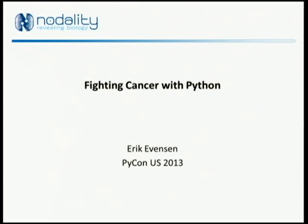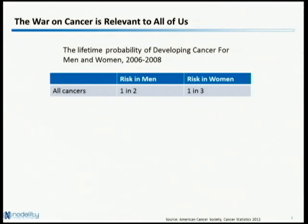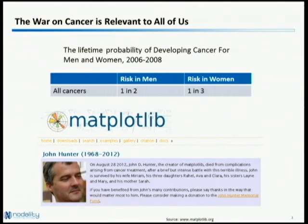I've actually been wanting to give this talk since I heard about Steve Yeagey's OSCon talk in 2011, where he talked about not wanting to work on cat pictures and starting to work on important problems. Cancer is a pretty important problem. For people who were cancer-free in 2006, among men there is a 50% chance of developing cancer in their lifetime, and in women it's one in three. Cancer also touched the Python community with the tragic early passing of John Hunter, author of Matplotlib, which we use a lot at Nodality.